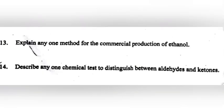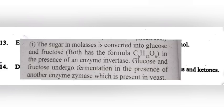Question 13: Explain any one method for the commercial production of ethanol. Answer: The sugar in molasses is converted into glucose and fructose, both having the formula C6H12O6. In the presence of an enzyme, invertase, glucose and fructose undergo fermentation in the presence of another enzyme, zymase, which is present in yeast.